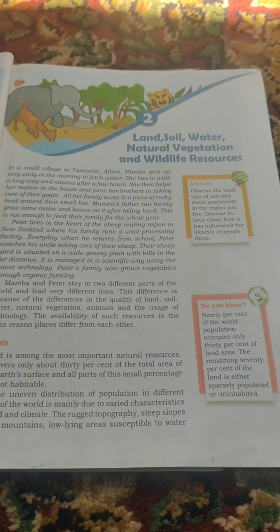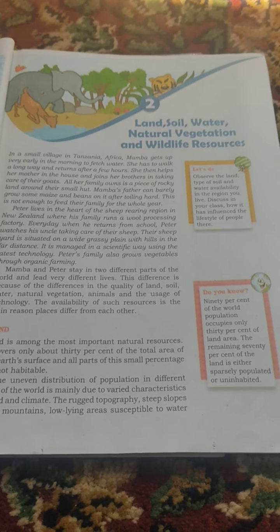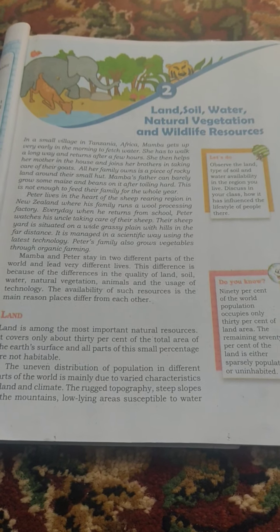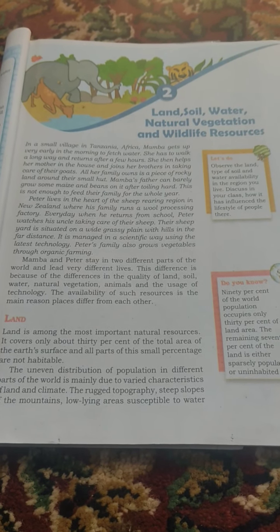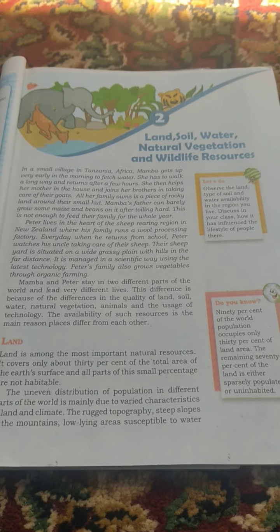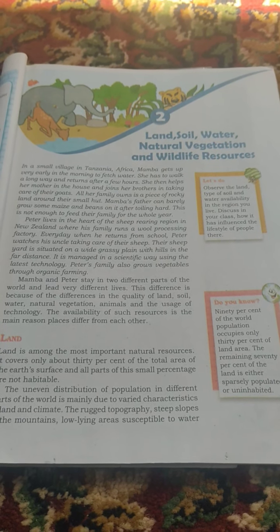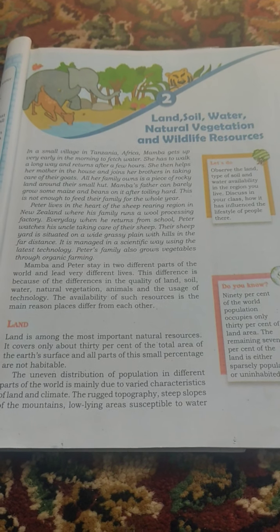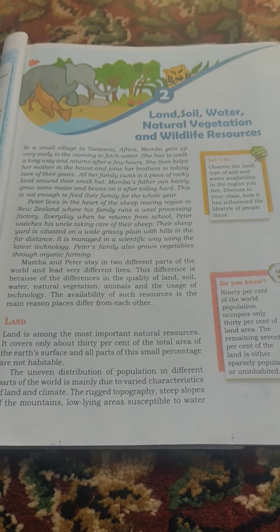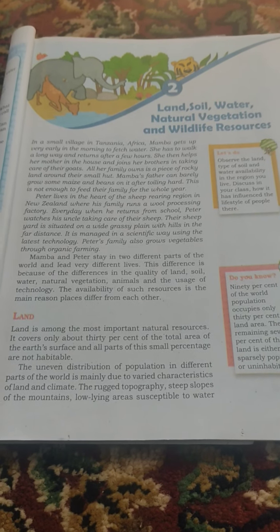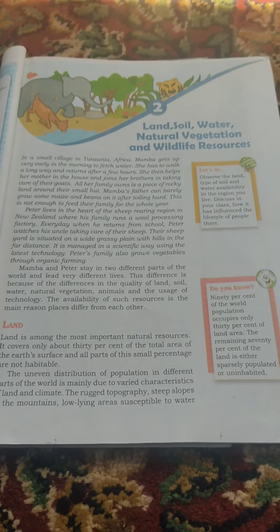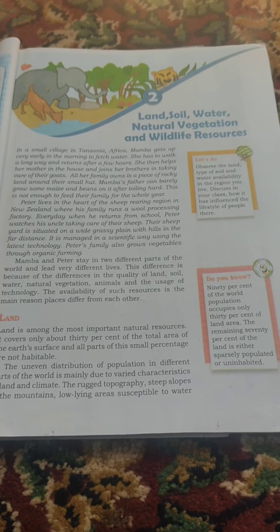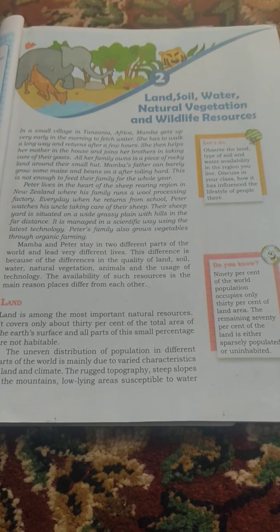All her family owns is a piece of rocky land. In a small hut, Mumbai's father can barely grow some maize and beans on it after toiling hard. This is not enough to feed their family for the whole year.